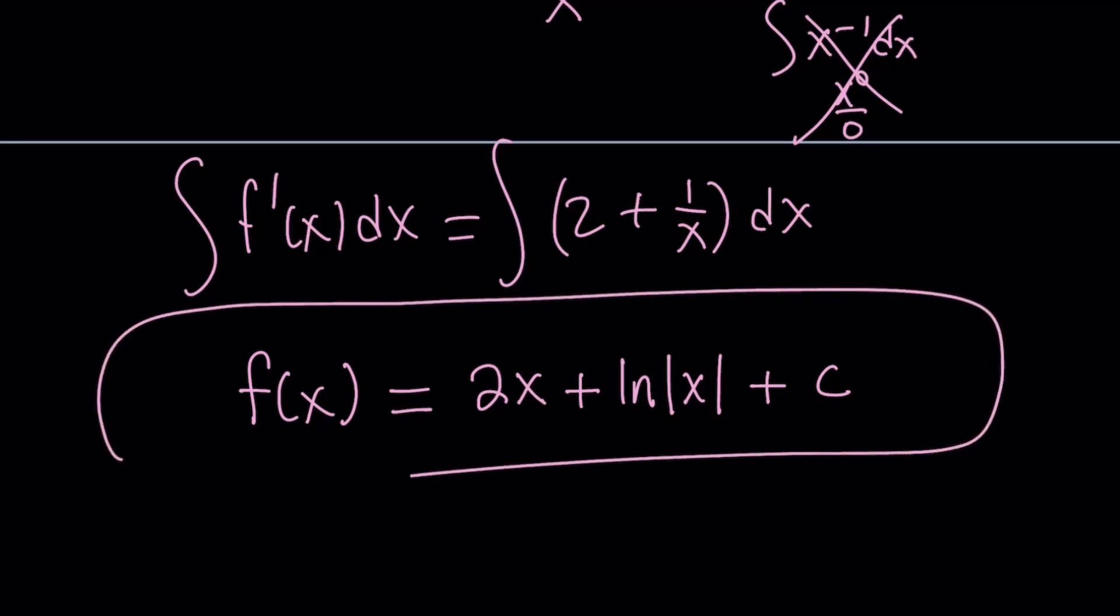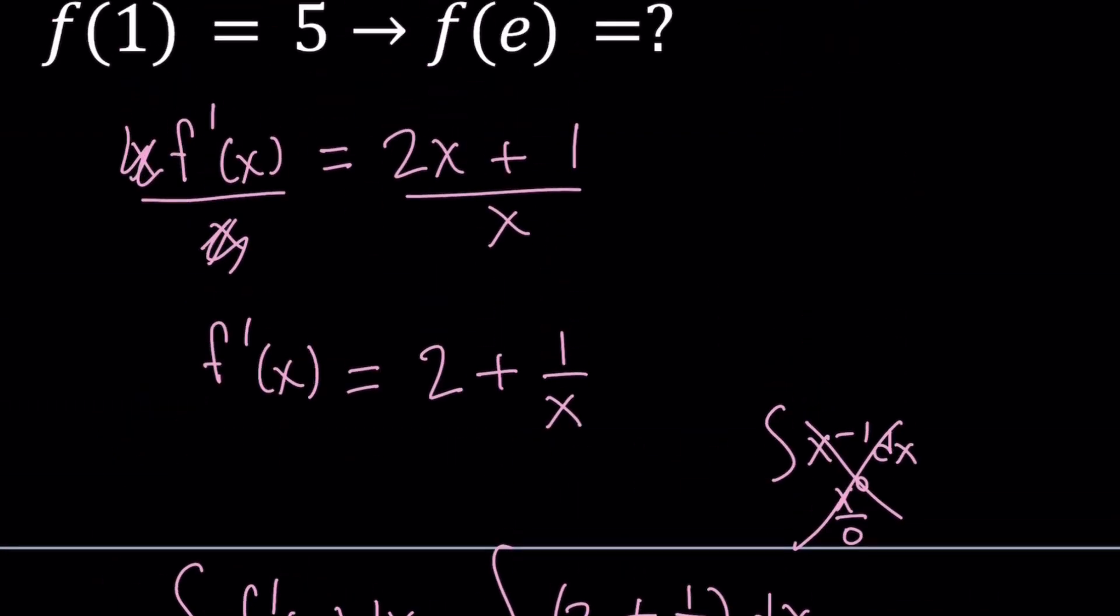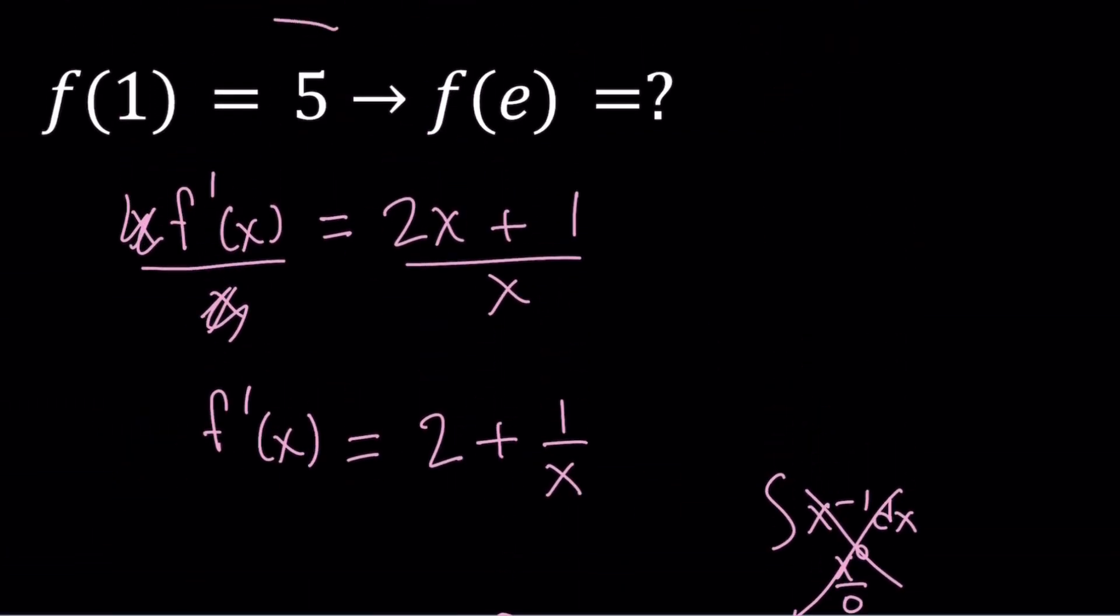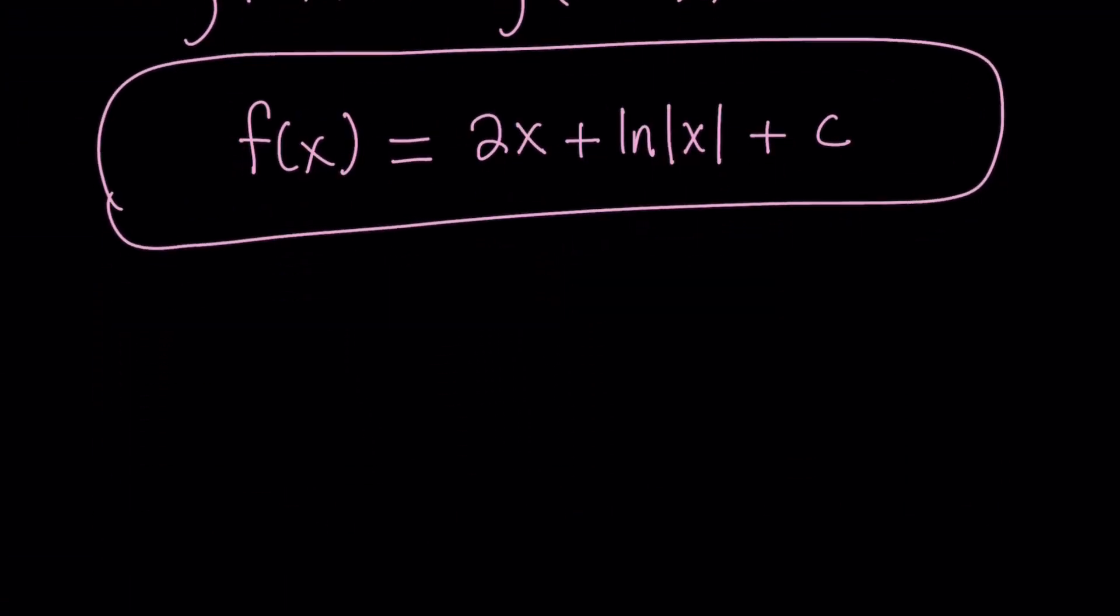That's actually really cool. If they asked us to find f of x, this will be the answer. But we're looking for something else. We know f of 1 is equal to 5. So let's go ahead and write it down. f of 1 is equal to 5.